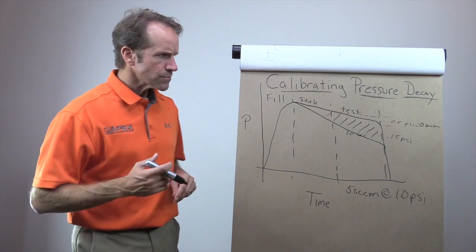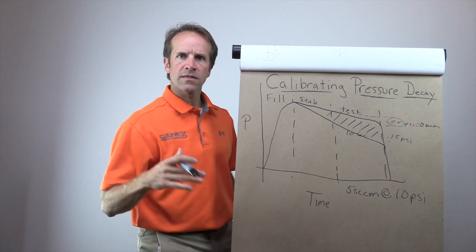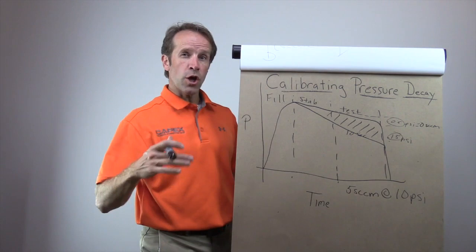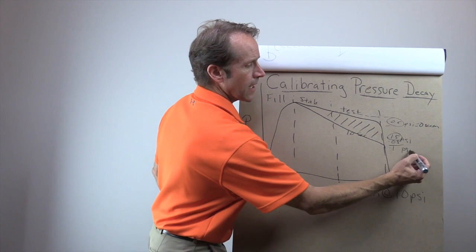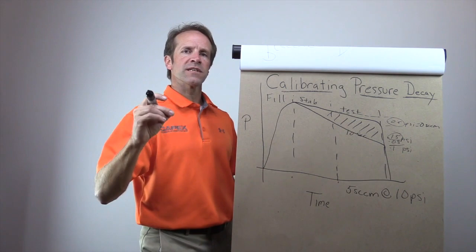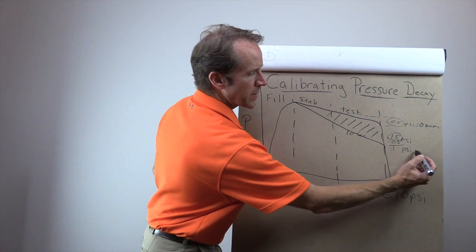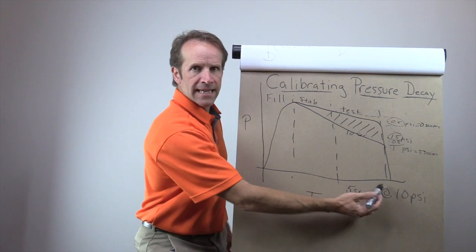So what does that mean? If the leak standard that we used was a 5 standard cubic centimeter per minute leak standard, 5 SCCM at let's just say at 10 psi. If we subtract these two, so this is the pressure loss of our known good part. This is our pressure loss of our known good part with the leak standard introduced. If we subtract those two, we end up with 0.1 psi.